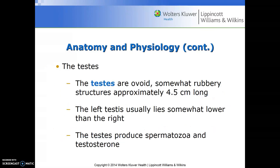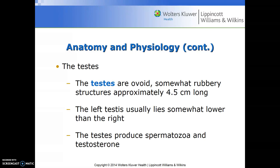The testes are ovoid, somewhat rubbery structures approximately 4.5 centimeters long. The left testis usually lies somewhat lower than the right. The testes produce sperm and testosterone. One important point when assessing testicular pain in young to middle-aged men: you'll see testicular torsion more often on the left than the right, and this is likely due to the anatomical location and the fact that it hangs lower.